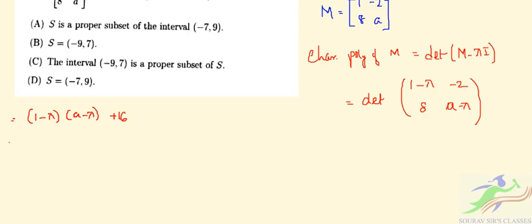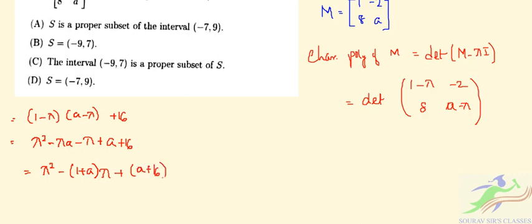If we simplify it further by multiplying out, we get λ² minus λa minus λ plus a plus 16. So we can write this as λ² minus (1+a)λ plus (a + 16).